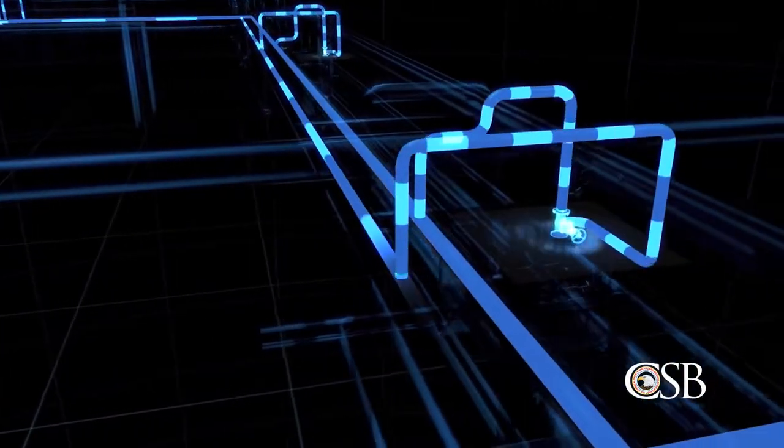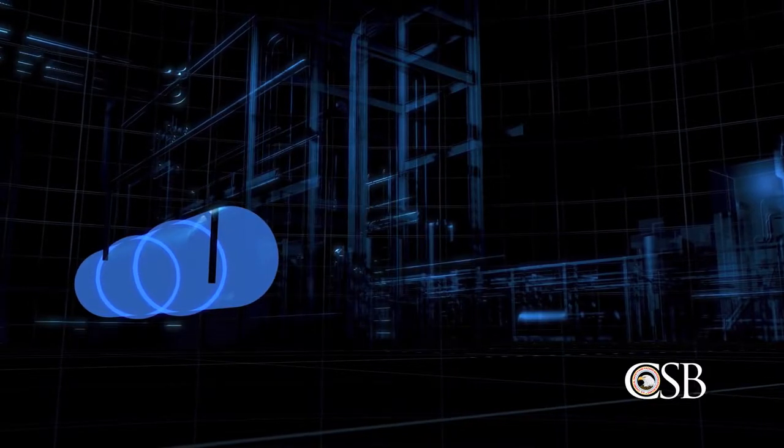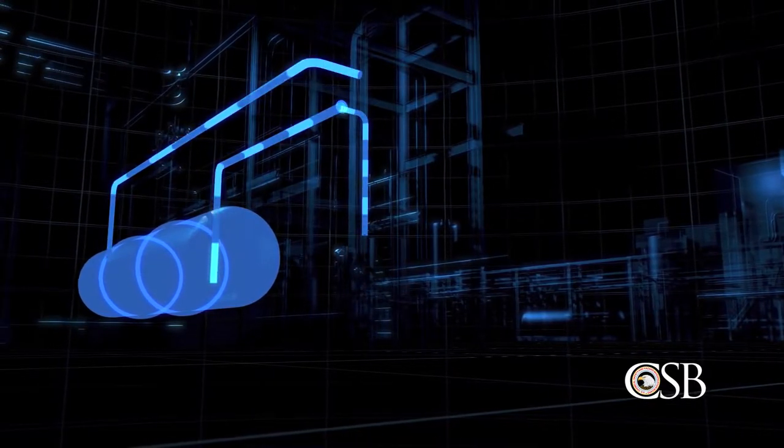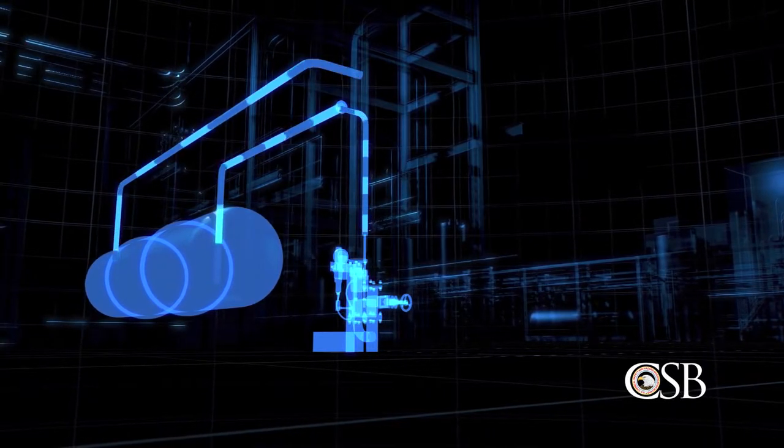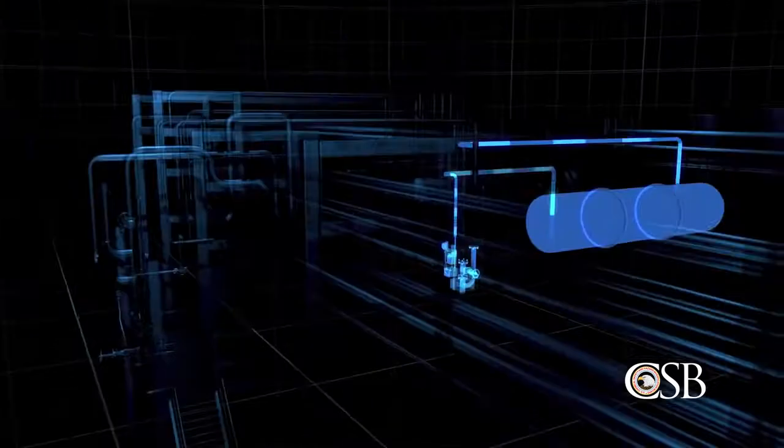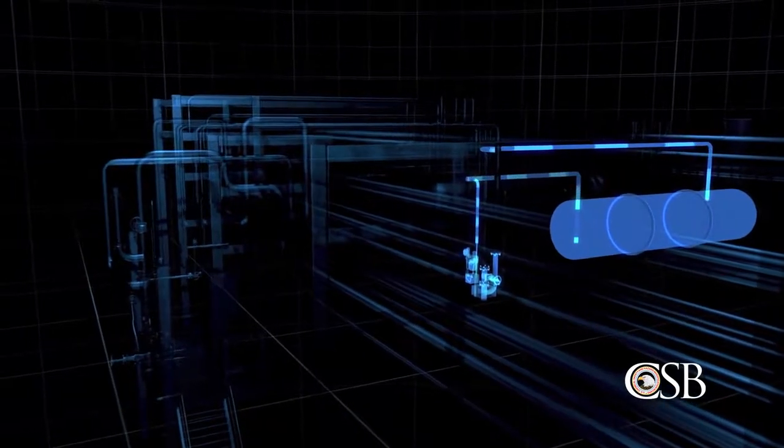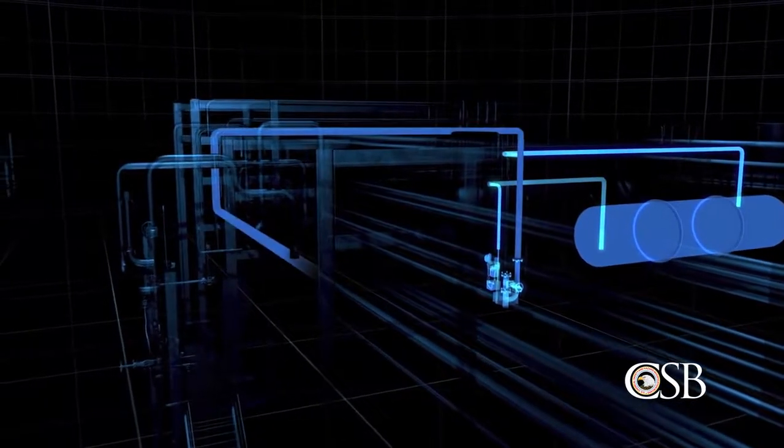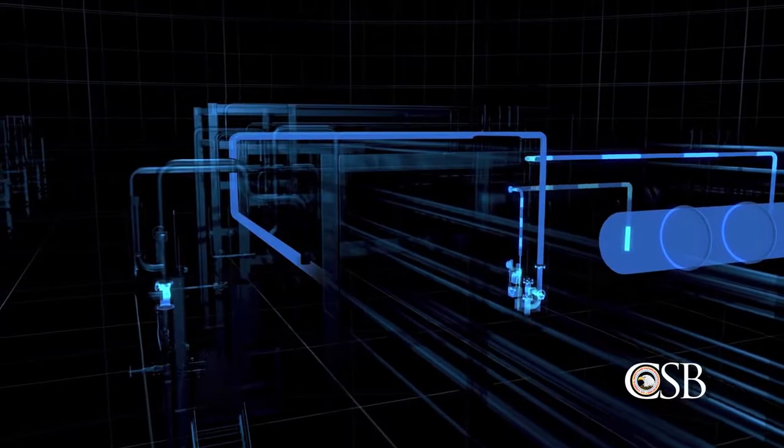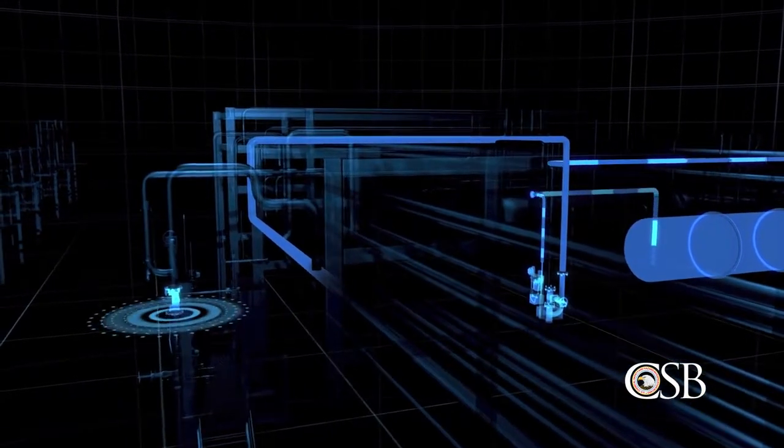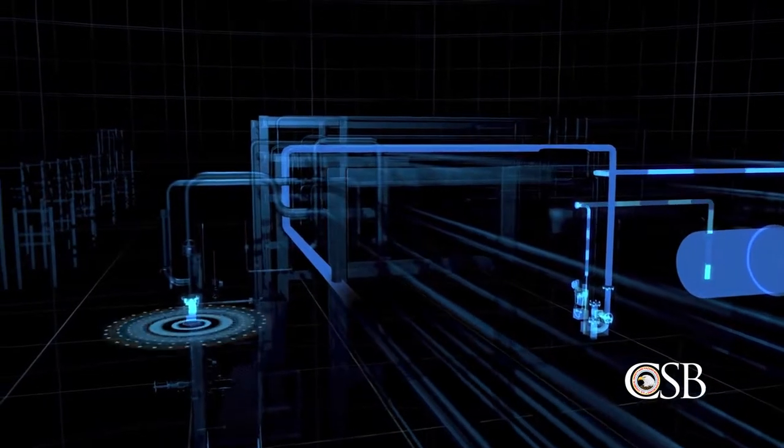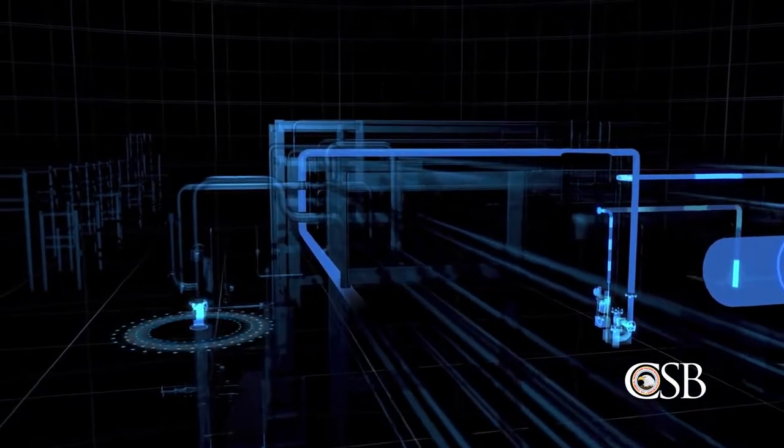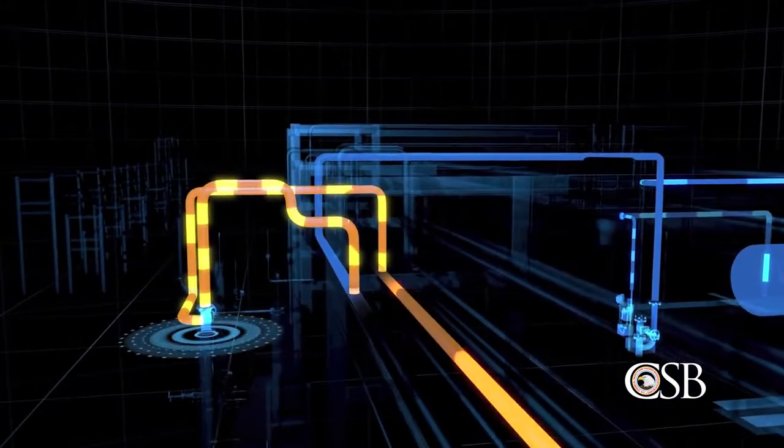First, operators cleared the blockage from a section of piping leading from the methyl mercaptan storage tank to a pump that forces methyl mercaptan into the reactor system. Then, operators began working to clear a section between the pump and the closest valve. They cracked open the valve and began to heat the piping to get rid of the hydrate. This caused some methyl mercaptan liquid to vaporize and flow through the valve into the vent header.